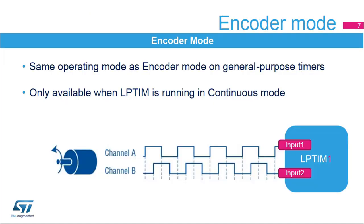The Low Power Timer features an encoder mode function that can interface with incremental quadrature encoder sensors using the peripheral's INPUT1 and INPUT2 inputs. Both inputs feature glitch filtering circuitry. The encoder function is similar to the one embedded by the general purpose timers. In order to use the encoder mode function, the Low Power Timer must be running in continuous mode.